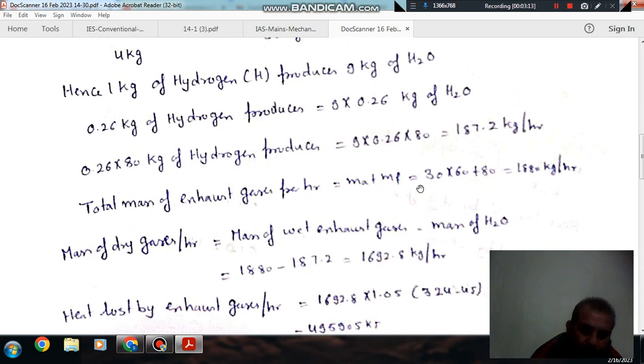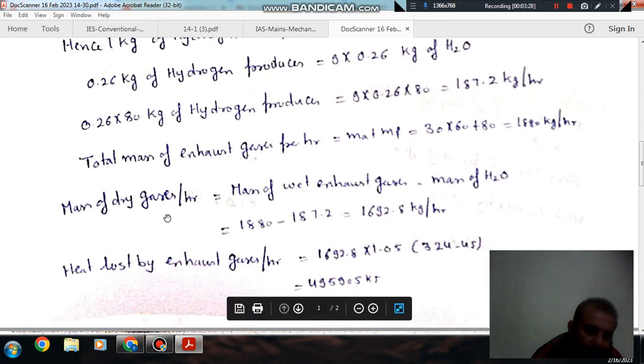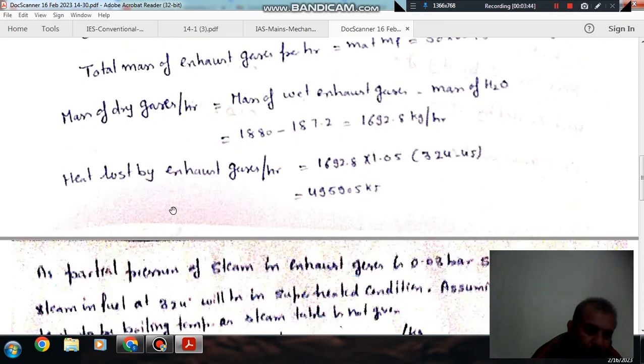Total mass of exhaust gases is mass of air plus mass of fuel, equals 30 times 60 plus 80 equals 1880 kg per hour. The mass of dry gases is total mass minus the H2O produced, which equals 1692.8 kg per hour.